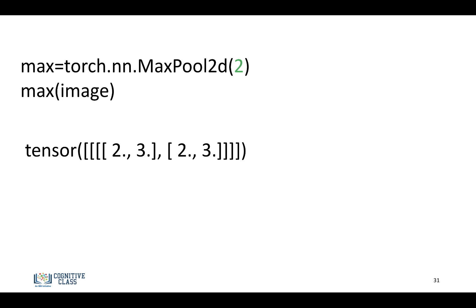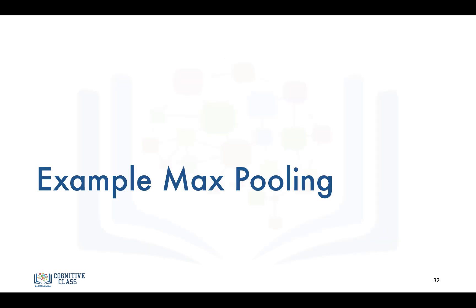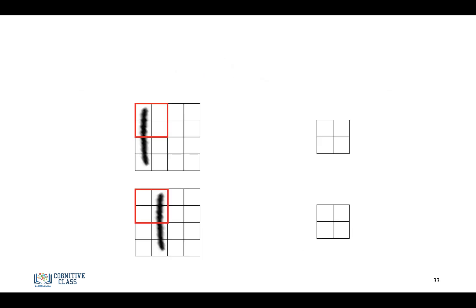So now let's see one reason why we do max pooling. So let's say we have two images. And they're identical, but one of them is shifted. If we perform max pooling on the images, we get identical results. So it helps to deal with shifts in the image.